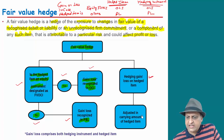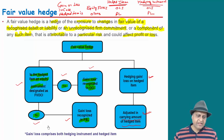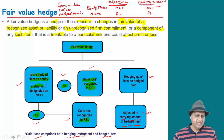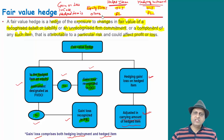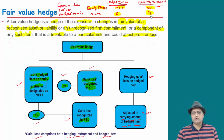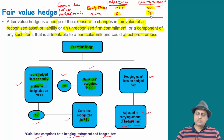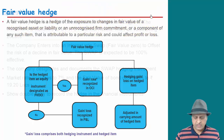Hedging gains and losses will change the hedged item's carrying amount. I will show you how to handle the hedging instruments and hedged items. If it goes through FV OCI, then it goes to OCI; the rest of the cases go to P&L. Whatever gain and loss there is, you will adjust the carrying amount of hedging items.